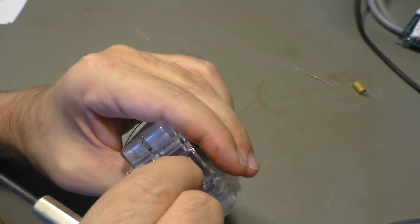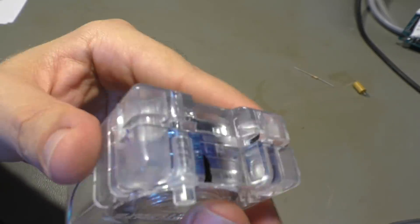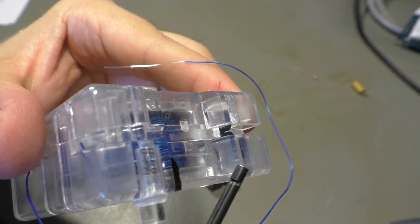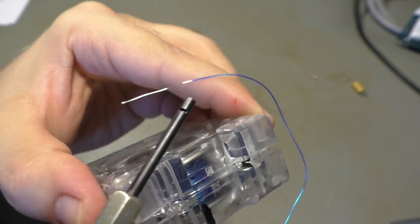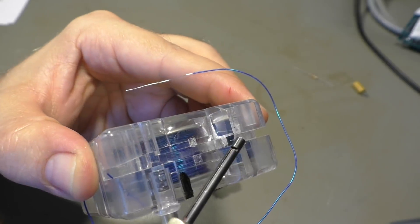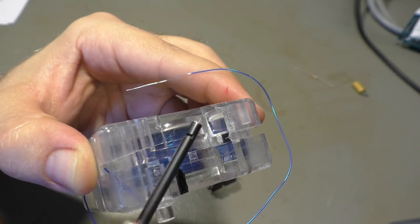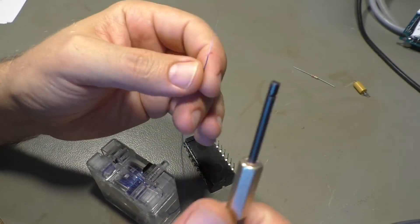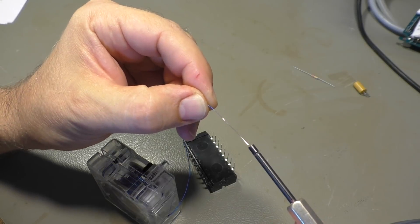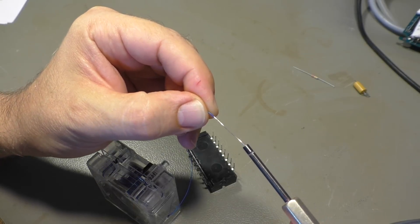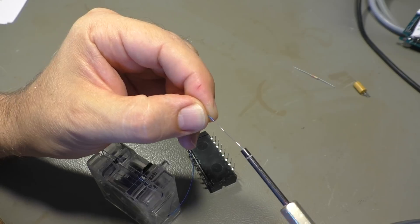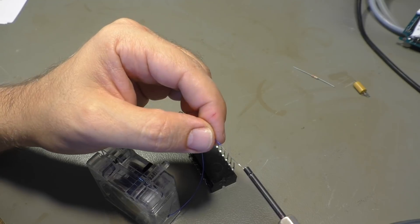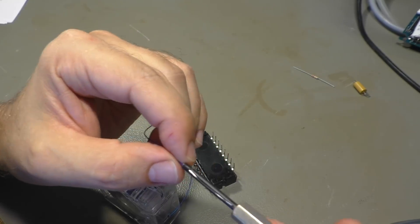It also has an integrated wire stripper. It's just a small piece of metal with a slot in it that is exactly the diameter of the inner wire, and it cuts through the insulation. Then you pull it back and it's not insulated anymore.